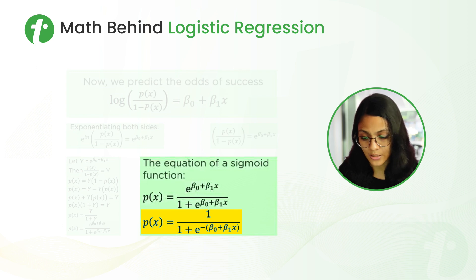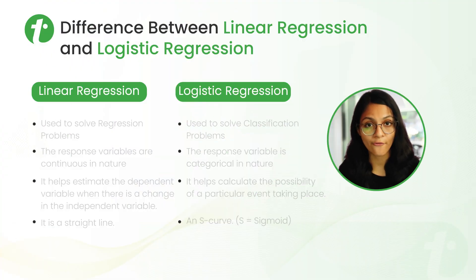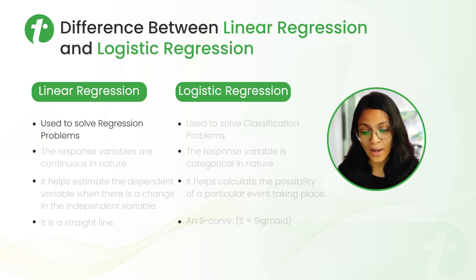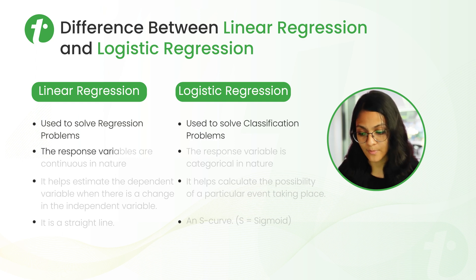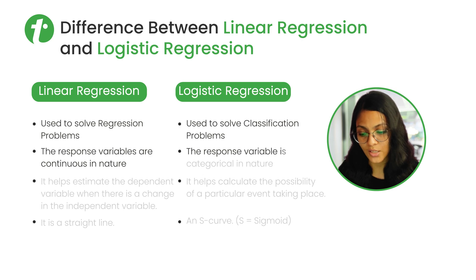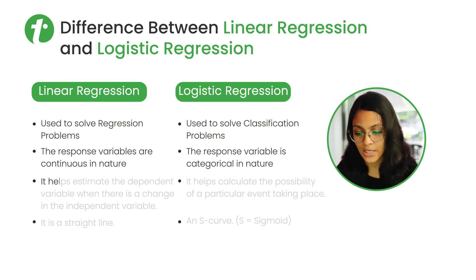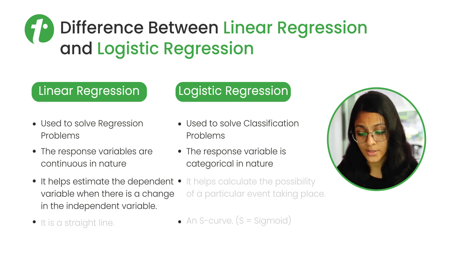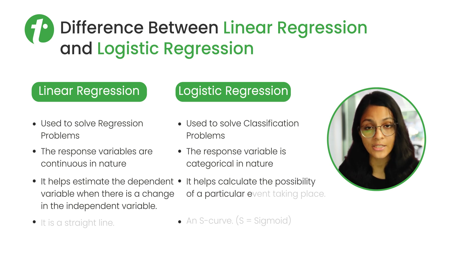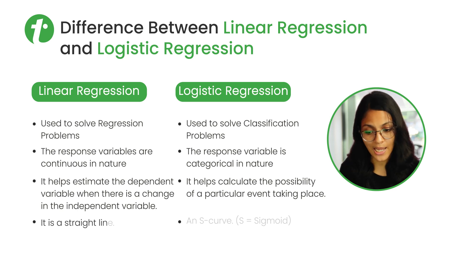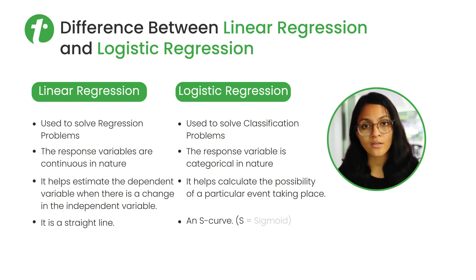Now let's talk about the differences between Linear Regression and Logistic Regression. We use Linear Regression for solving regression type problems, while Logistic Regression is used for classification type problems. The response variable is continuous in Linear Regression, while it is categorical in Logistic Regression. Linear Regression estimates the dependent variable when the independent variable changes, while Logistic Regression calculates the probability of a particular event. Linear Regression is a straight line; Logistic Regression is an S-curve, also called the sigmoid curve.